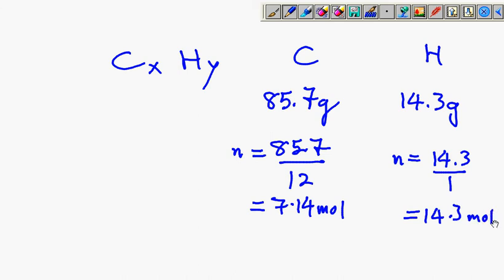The ratio or the empirical formula for this hydrocarbon is 7 to 14. 7 to 14 is like 1 to 2. We know that the empirical formula for this hydrocarbon X is actually CH2.